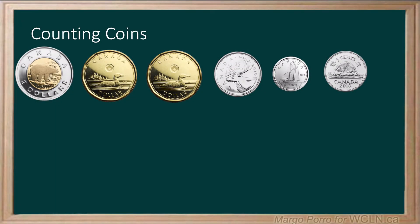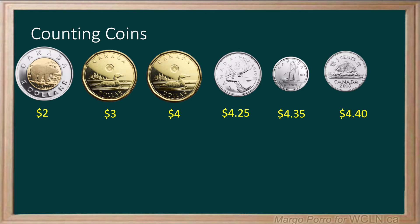Here is another example. Starting from the coins of the largest value, two dollars, we count up by one dollar to three dollars, by one dollar to four dollars. Now the coins are worth less than a dollar so we need to count up using cents. Count up by 25 cents to four dollars and 25 cents. Next count up by 10 cents to four dollars and 35 cents. Finally count up by five cents to four dollars and 40 cents. Four dollars and 40 cents is written with the dollar sign.